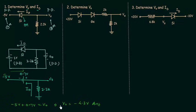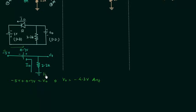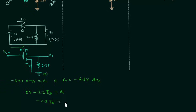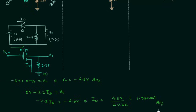You can see how simple it is to calculate the values using potential at points. Now we will find the value of Id, the current flowing through the diode. Starting from ground (0 volts) and moving towards V0: 0 volts minus 2.2 Id equals V0. We have already calculated V0 as minus 4.3 volts, so 2.2 Id equals 4.3 volts, and Id is equal to 4.3 volts divided by 2.2 kilo ohms, which equals 1.955 milliamps. We have easily calculated V0 and Id using the potential at points.